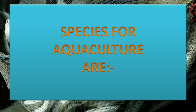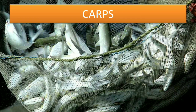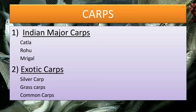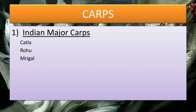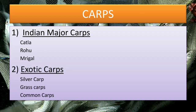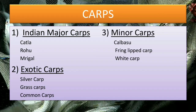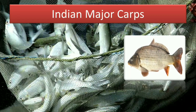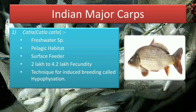Now we will study the species used for aquaculture. First is carp. In carp, there are three groups: Indian major carp — which includes Katla, Rohu, and Mrigal; exotic carp — which includes silver carp, grass carp, and common carp; and third is minor carp — which includes Catla basu, fringe-lipped carp, and white carp. We will first study Indian major carp, commonly called IMC.